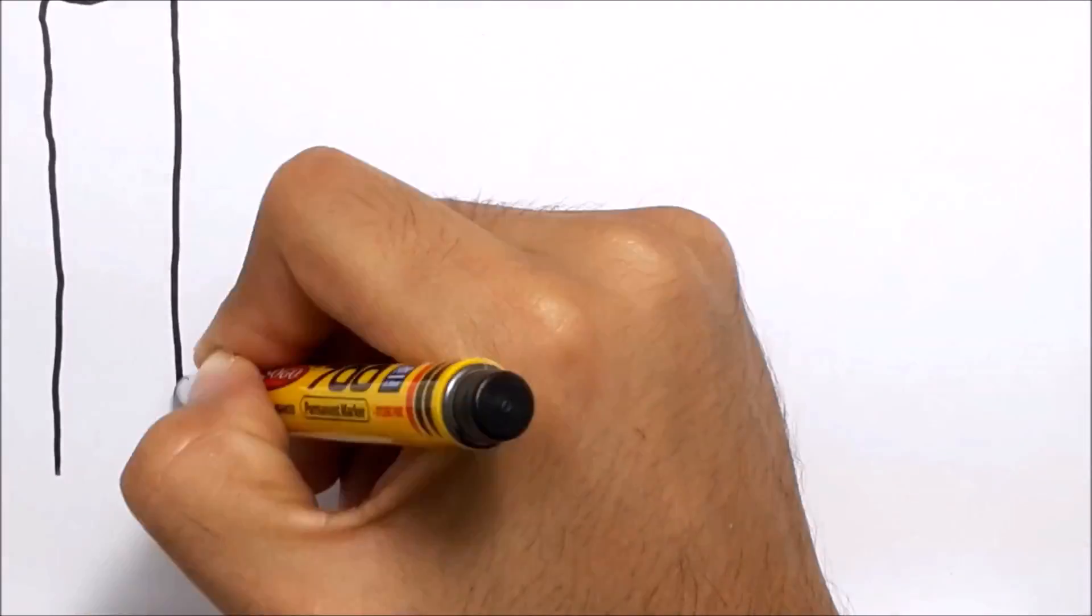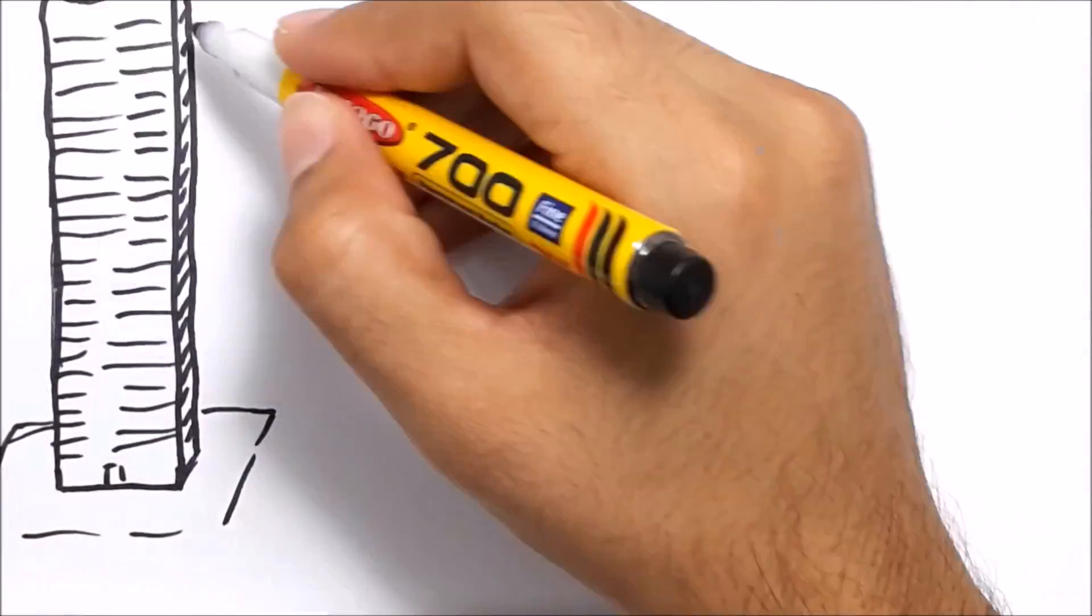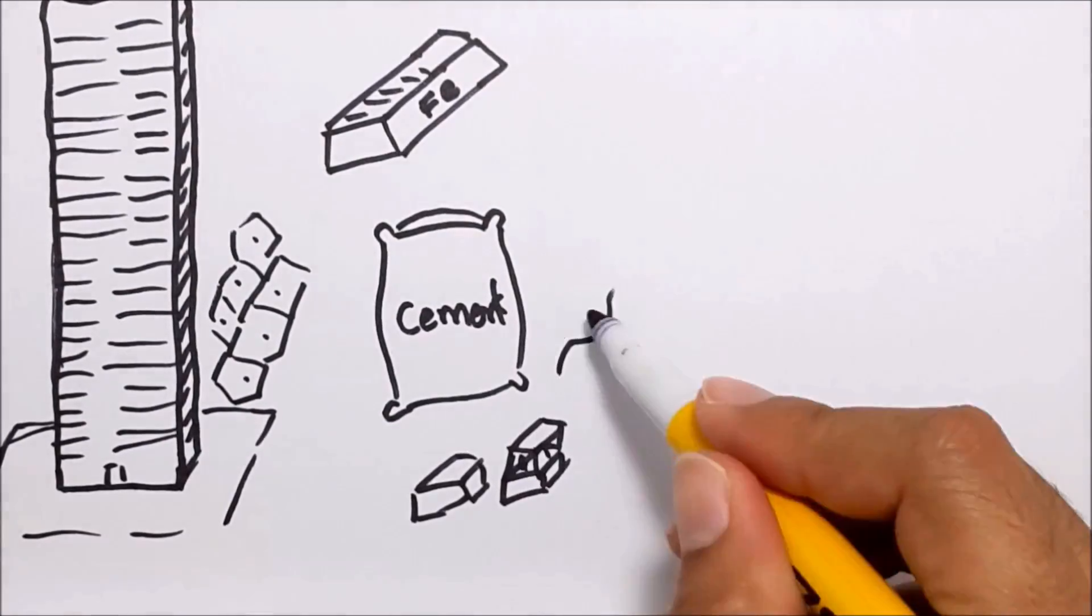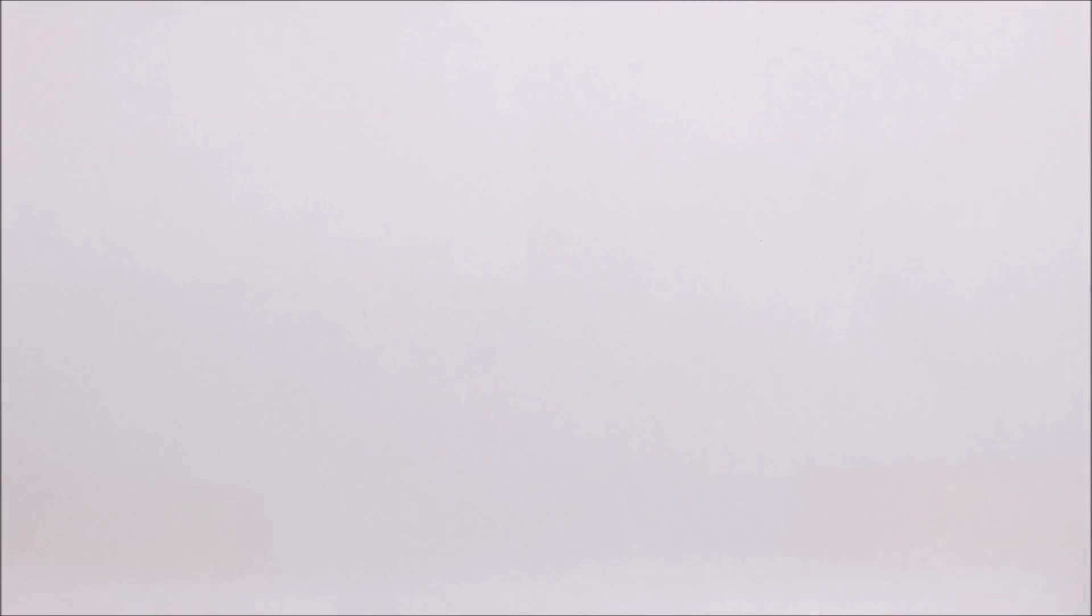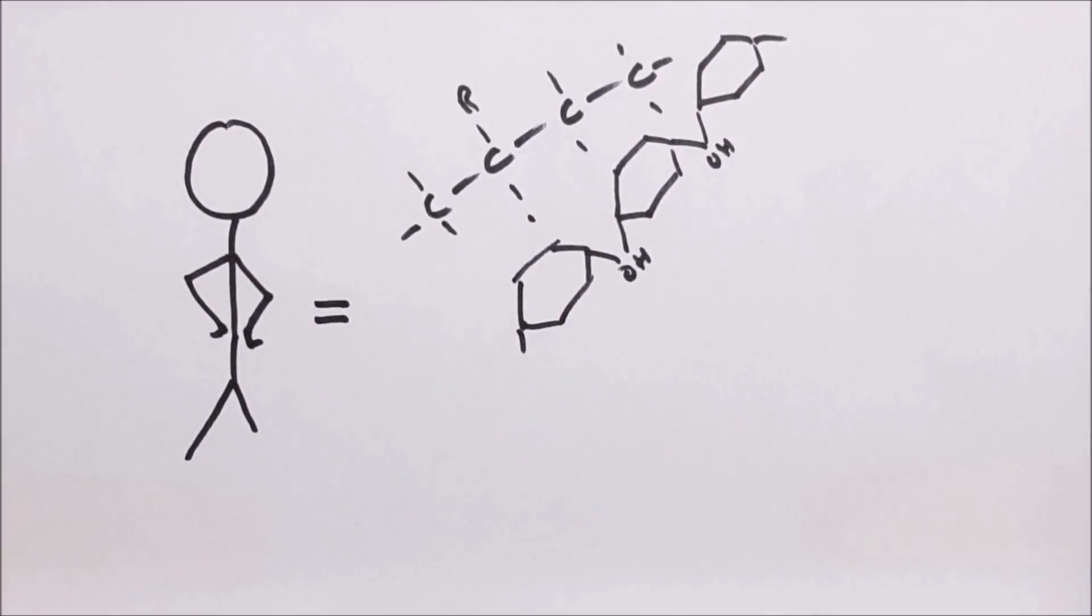The thing is, our bodies are kinda like skyscrapers. And just as skyscrapers require steel, concrete, and bricks to be strong and shiny, our bodies need carbohydrates, fats, and proteins to grow tall and healthy.